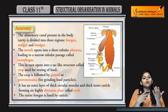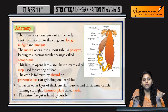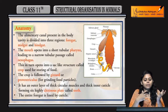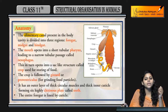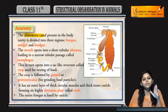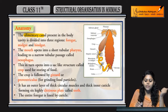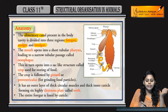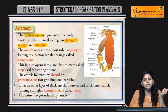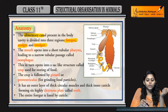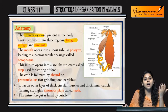Now coming to the anatomy of cockroaches, first of all we will talk about the alimentary canal of cockroaches. The alimentary canal of cockroaches is divisible into three main regions: foregut, midgut, and hindgut.